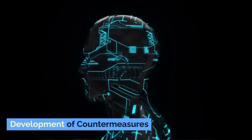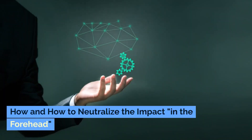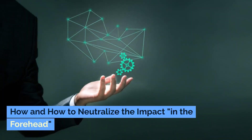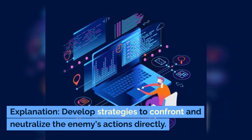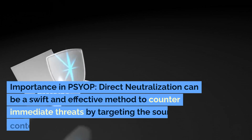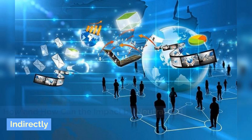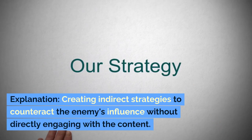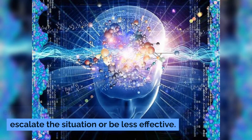Development of countermeasures. How to neutralize the impact directly: develop strategies to confront and neutralize the enemy's actions directly. Direct neutralization can be a swift and effective method to counter immediate threats by targeting the source or content of the attack. How to neutralize the impact indirectly: create indirect strategies to counteract the enemy's influence without directly engaging with the content. Indirect methods offer alternative ways to significantly diminish the enemy's influence when confrontation might escalate the situation or be less effective.